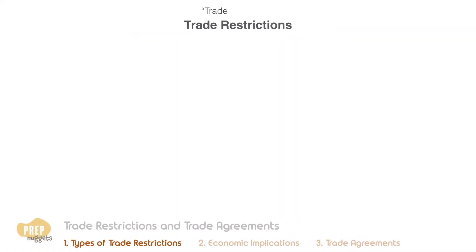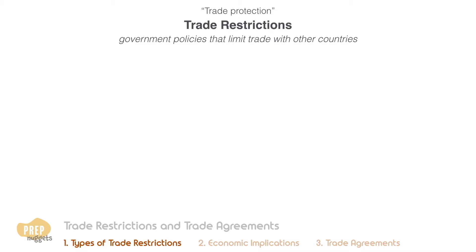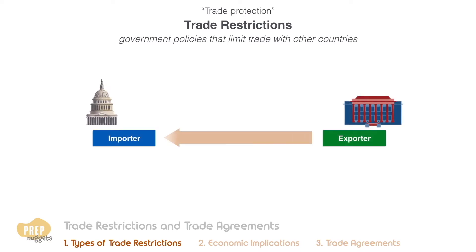Trade restrictions, or trade protection, are government policies that limit trade with other countries. They can be imposed by the government of countries that import or the countries that export.